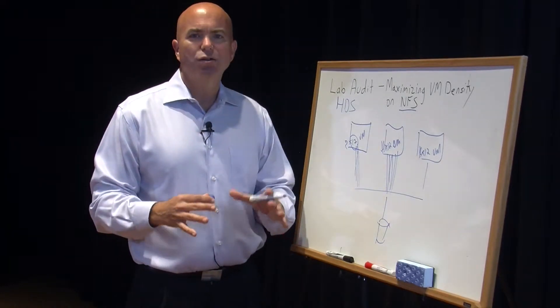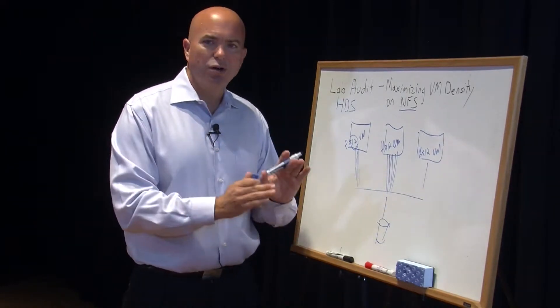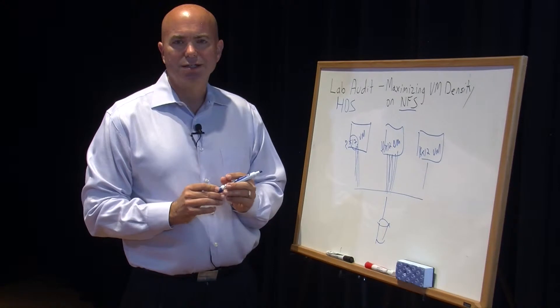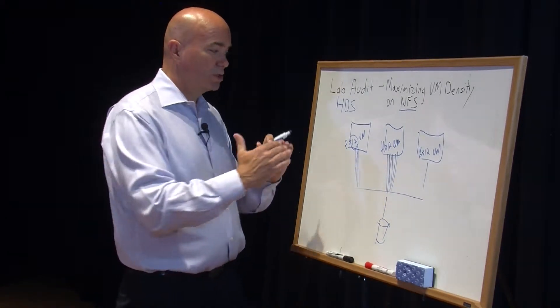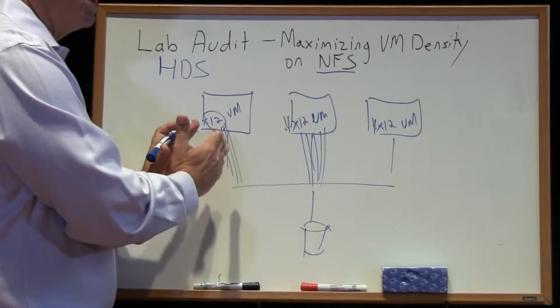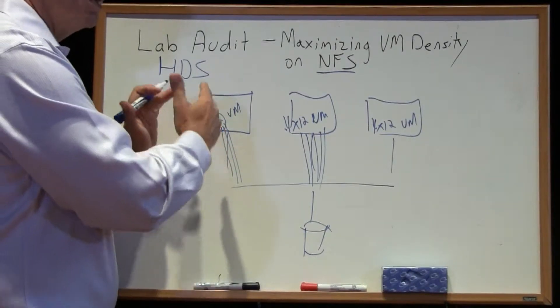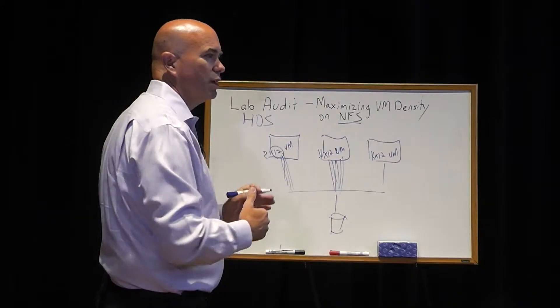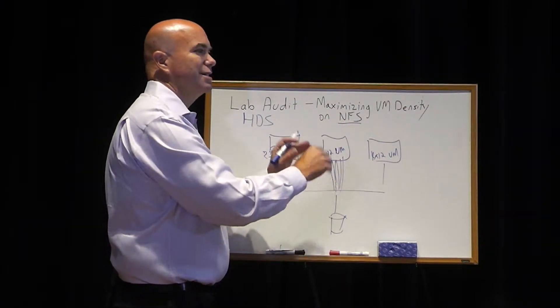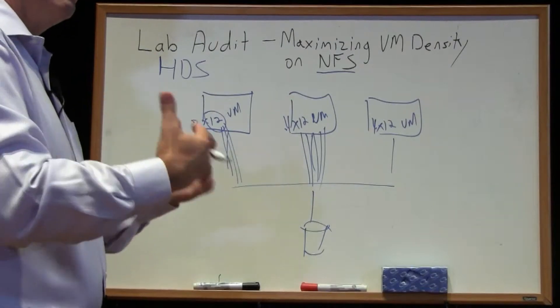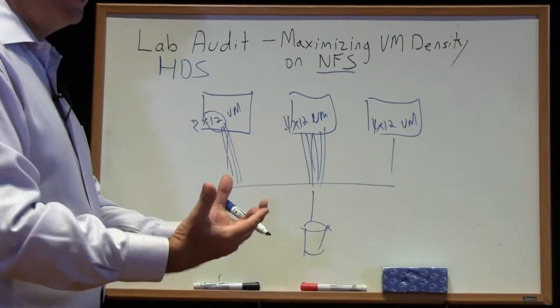The amount of random I/O that we're generating can really bring almost any storage system to its knees. And so we want a storage system that allows us to start with kind of normal density, say 12 virtual machines or 20 virtual machines, and then really scale that to maybe 40, 60, 80 virtual machines. And so that requires a system that can scale.